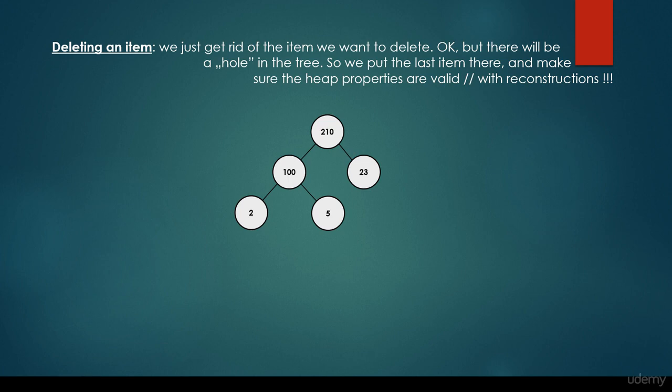We have already discussed how to insert items and how to construct a heap data structure. In this case, we are going to consider how to delete an item. We just get rid of the item we would like to delete, but there will be a hole in the tree, so we put the last item there and make sure the heap properties are valid, with heap reconstructions for example.